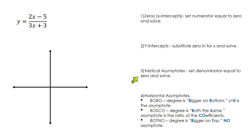I break it down to these four steps, so let's kind of look at these. First off, to find the zeros, aka the x-intercepts, let's set the numerator equal to zero and solve.